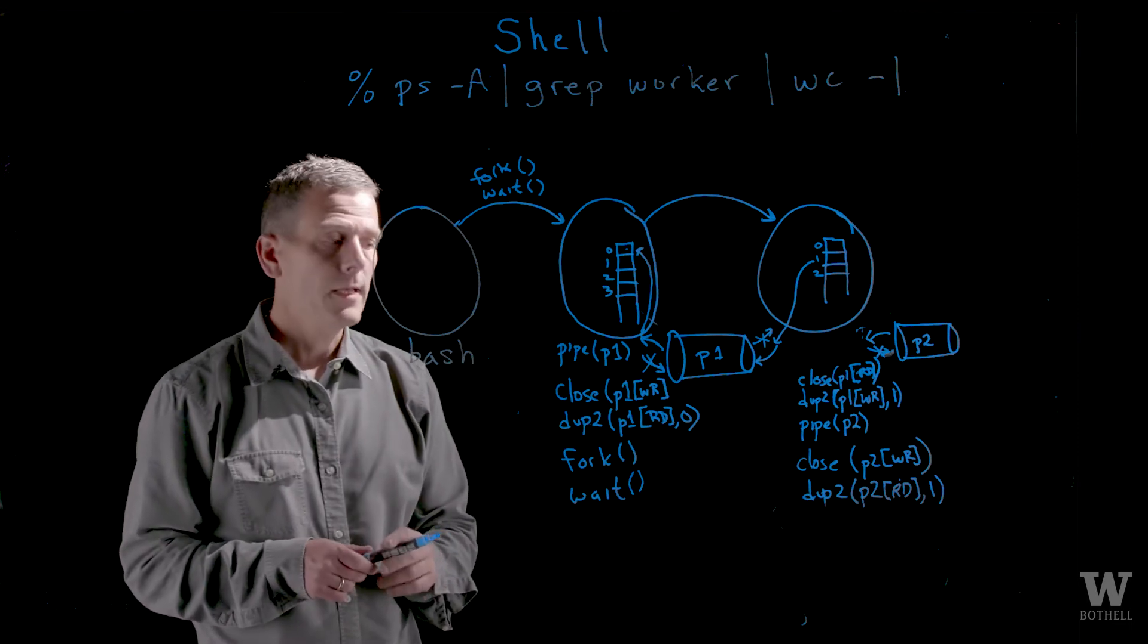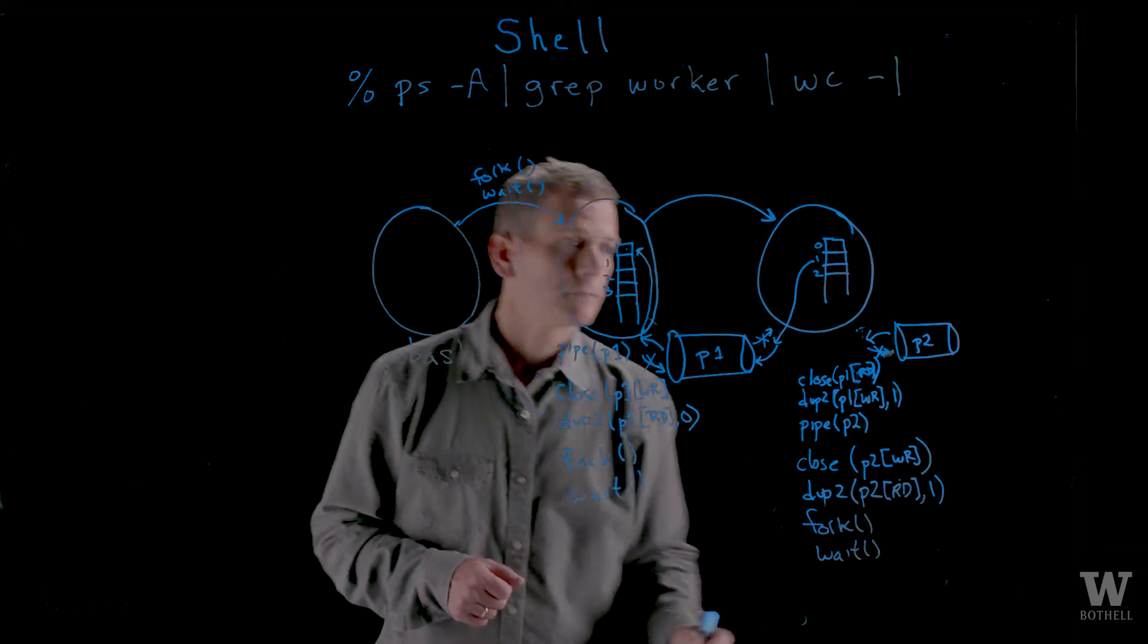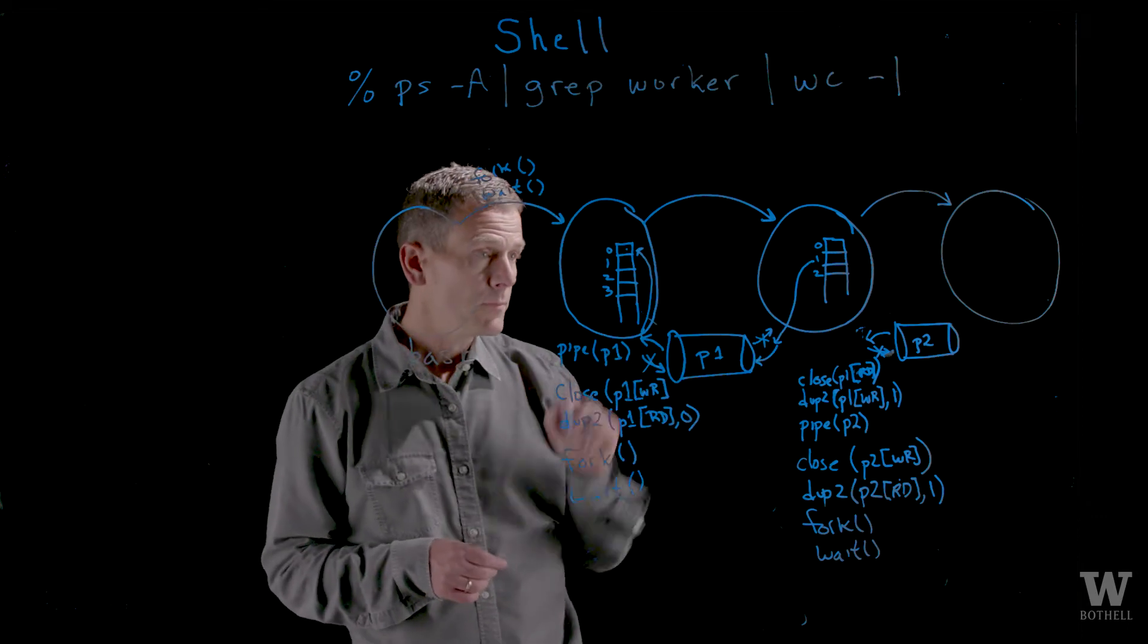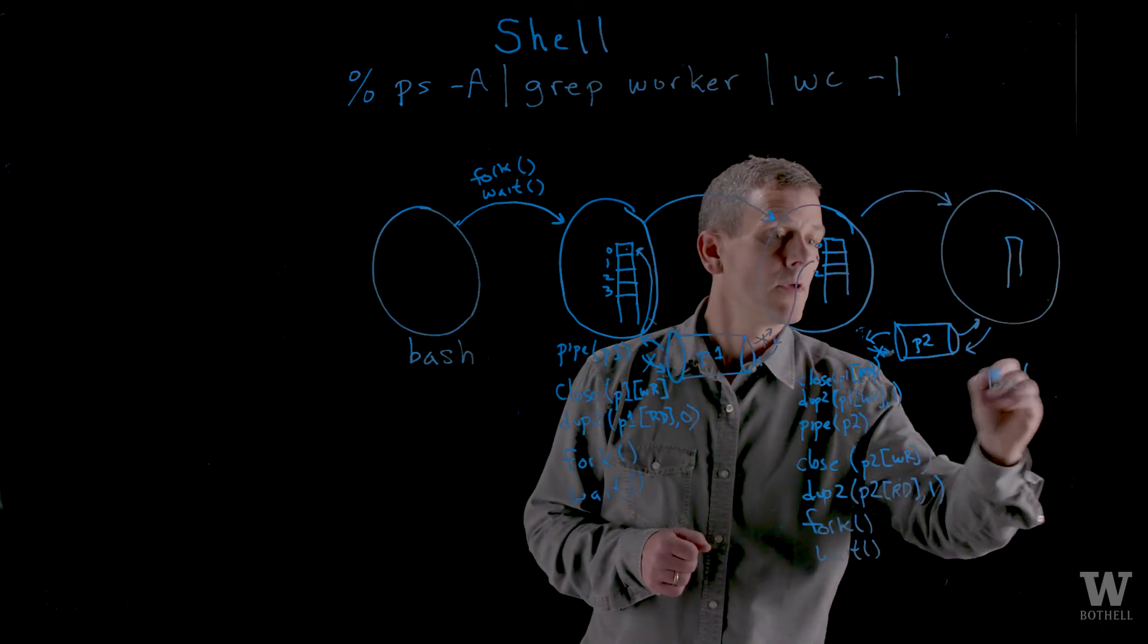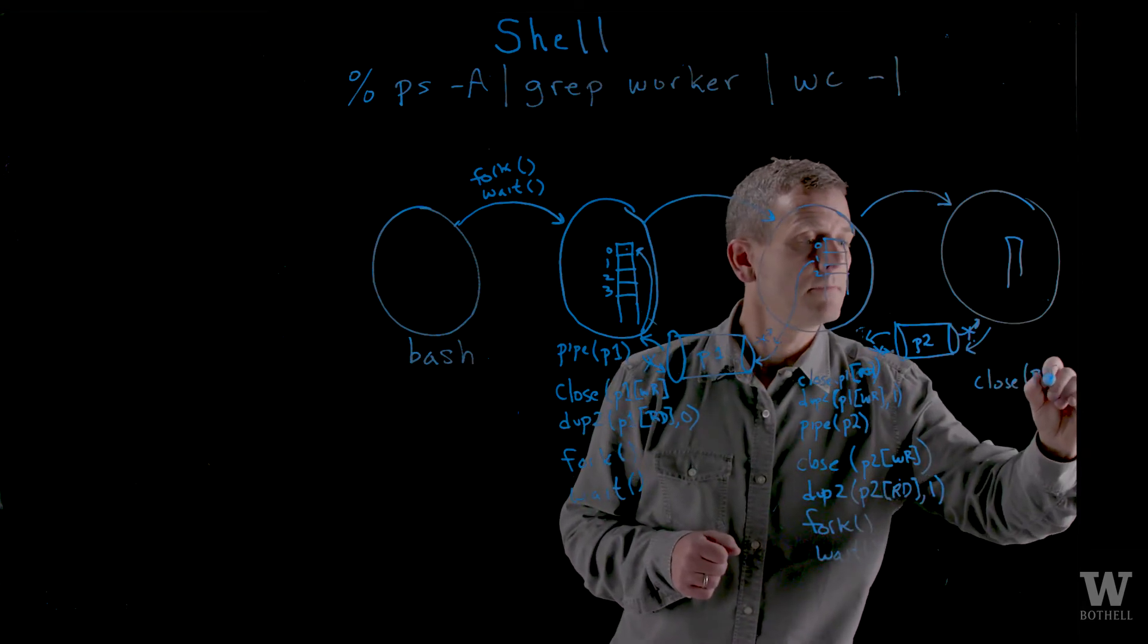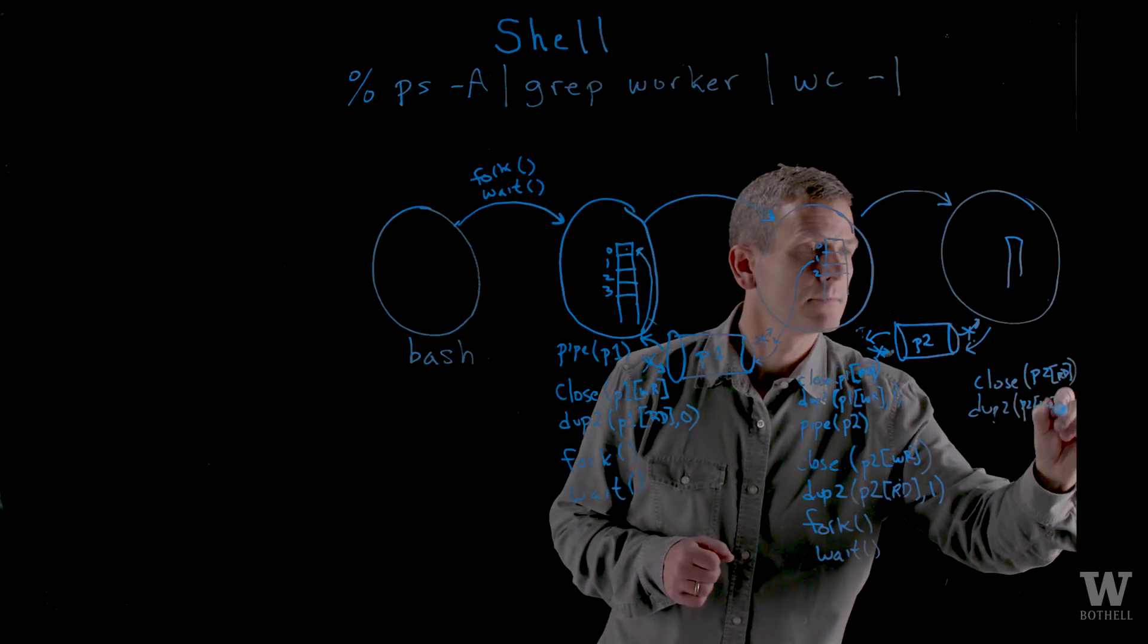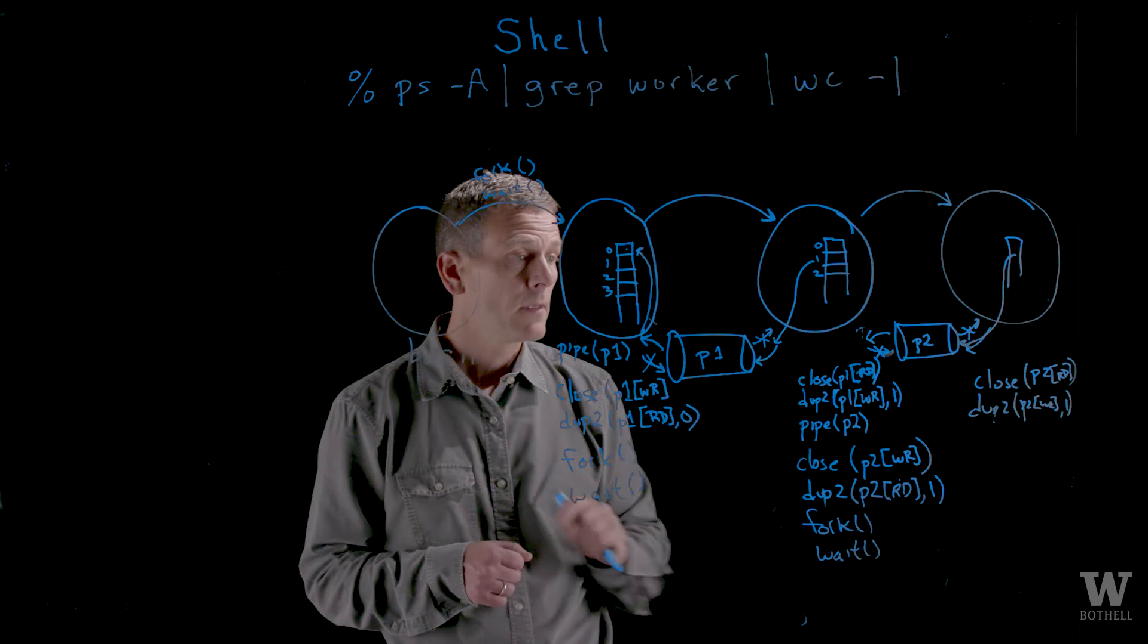And then I will go ahead and fork and wait. So what happens is I create another process and I wait until it finishes. In this process, I need to close the read side of the pipe, of p2, and then dupe the right side of the pipe over to standard out.